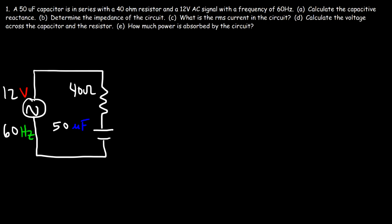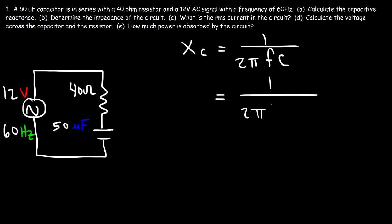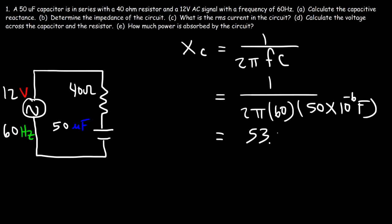Calculate the capacitive reactance. The formula is XC equals 1 divided by 2 pi FC. F is the frequency, which is 60 Hertz, and the capacitance is 50 microfarads — micro is 10 to the minus 6. Plugging this in, you should get 53.05 ohms. So that's XC.